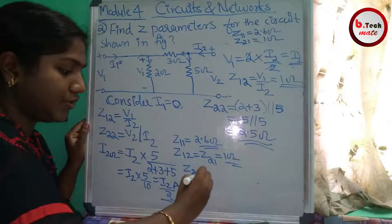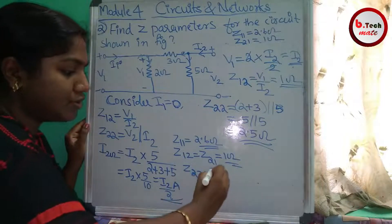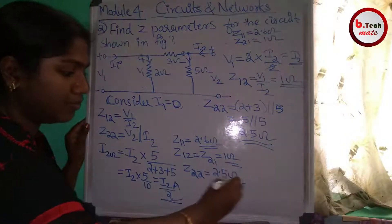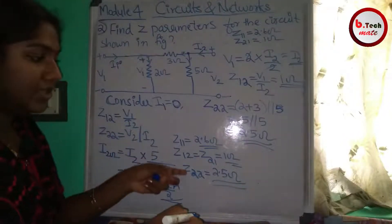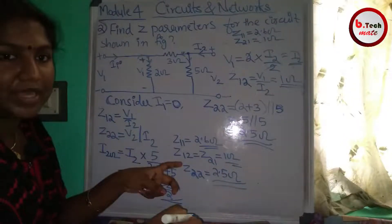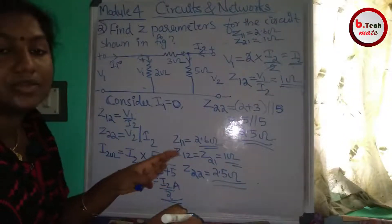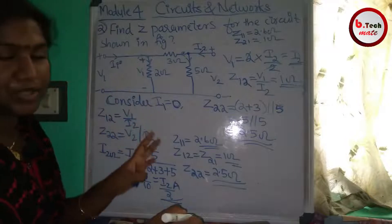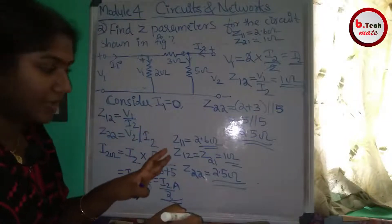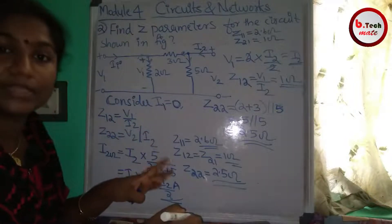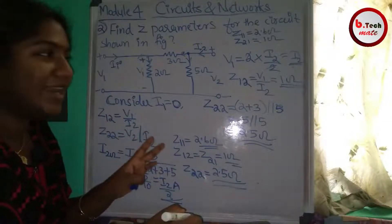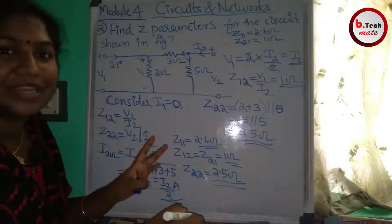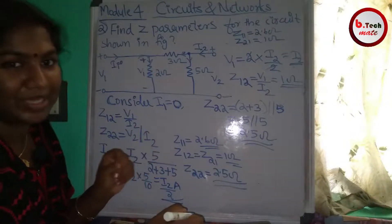So Z22 equals 2.5 ohm. We have now found all four Z-parameters for this T-network using the standard method of open-circuit conditions. The problem is solved and we can move to the next variable problem.